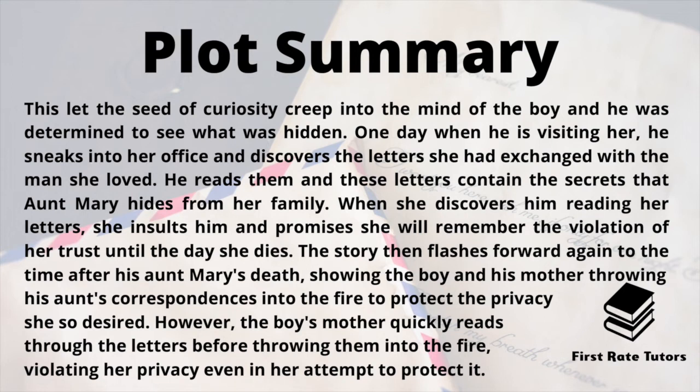He reads them, and these letters contain the secrets that Aunt Mary hides from her family. When she discovers the boy reading her letters she insults him and promises she will remember the violation of her trust until the day she dies. The story then flashes forward to the time after his aunt Mary's death, showing the boy and his mother throwing his aunt's correspondence into the fire to protect the privacy she so desired. However, the boy's mother quickly reads through the letters before throwing them into the fire, violating her privacy even in her attempts to protect it.